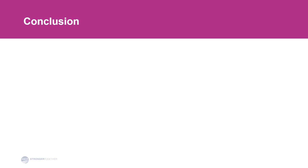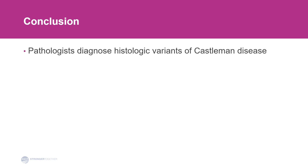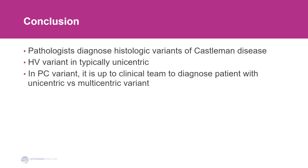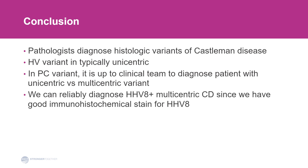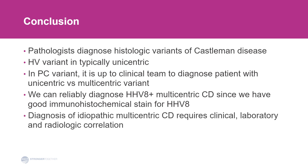In conclusion, we as pathologists diagnose histologic variants of Castleman disease, not clinical variants. The hyaline vascular variant, which is the most common variant in our practice, is typically unicentric. However, the plasma cell variant can be unicentric or multicentric, and we call it plasma cell variant — it is up to the clinical team to further diagnose the patient with the appropriate clinical variant. We can reliably diagnose HHV8 positive multicentric Castleman disease since we have a good immunohistochemical stain that will demonstrate HHV8 positive cells. Diagnosis of idiopathic multicentric Castleman disease is complex and requires correlation with clinical, laboratory, and radiologic findings. Thank you very much.